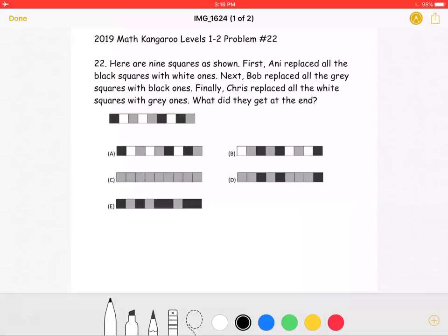This is the 2019 Math Kangaroo Levels 1-2, Problem Number 22. Here are nine squares as shown.